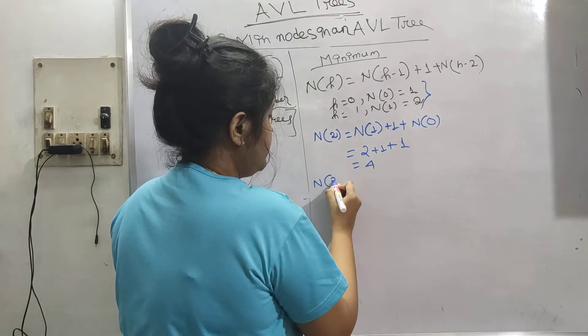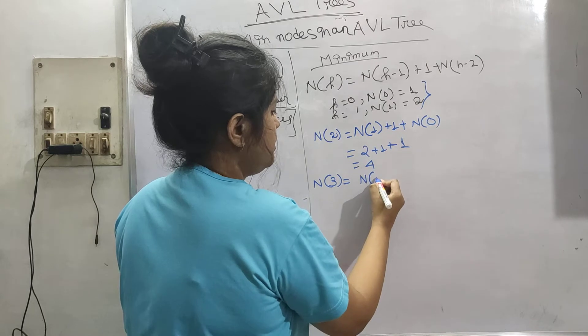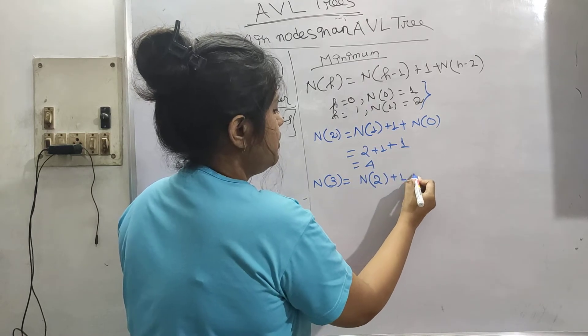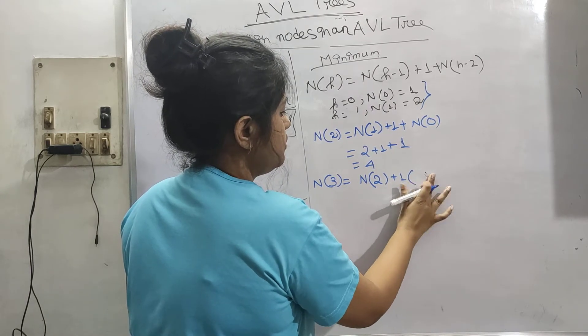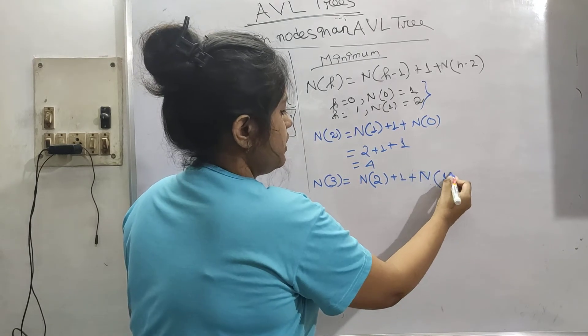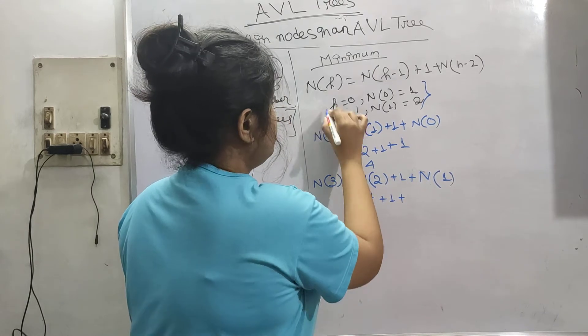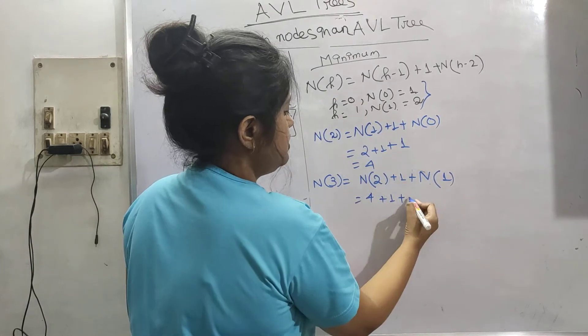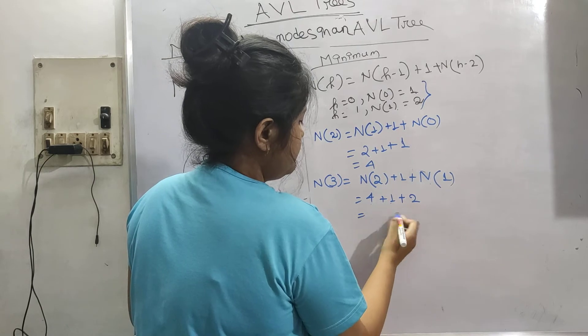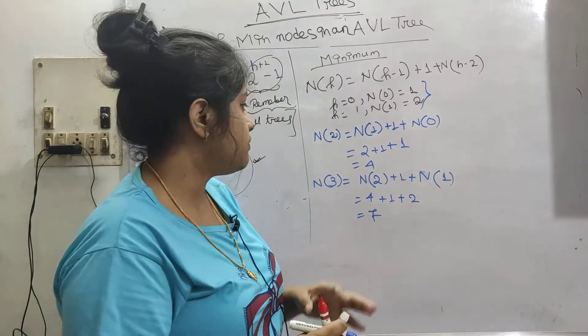Likewise, if we are trying to find n of 3: n(2) means 4 plus 1 plus n(1) means 2. So 4, 5, 6, 7 like this. This is a very generally asked question.